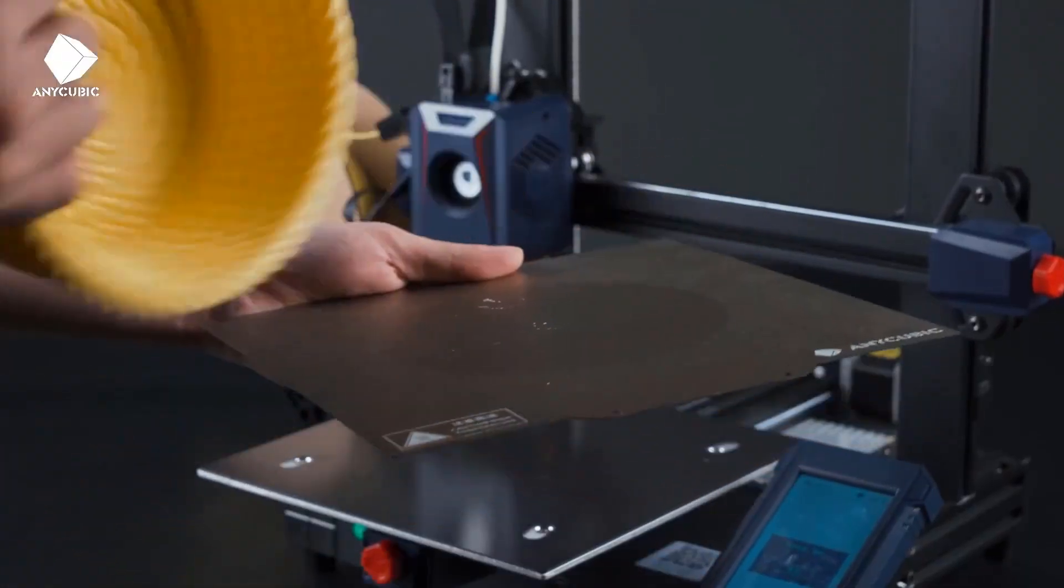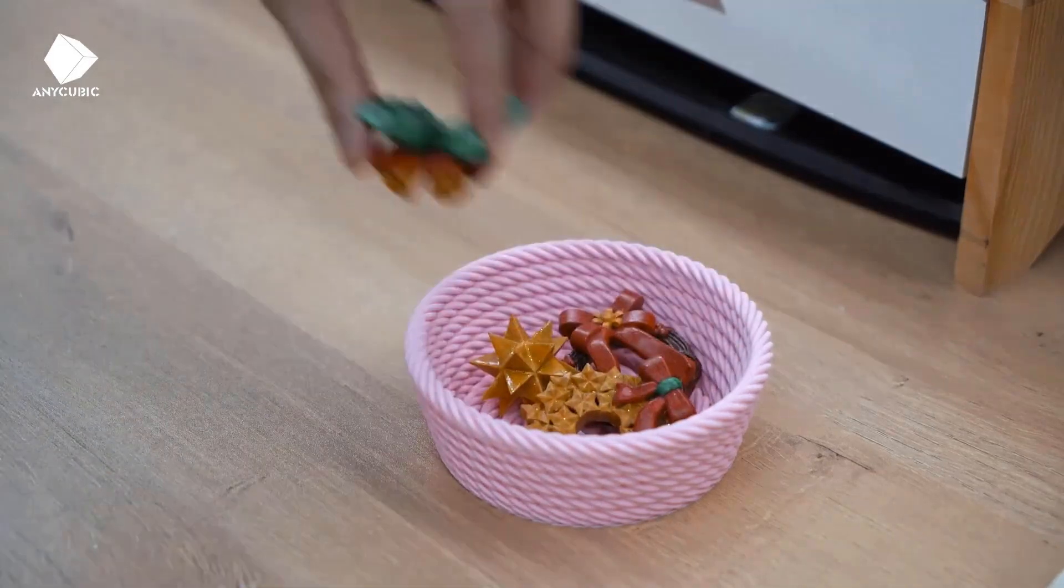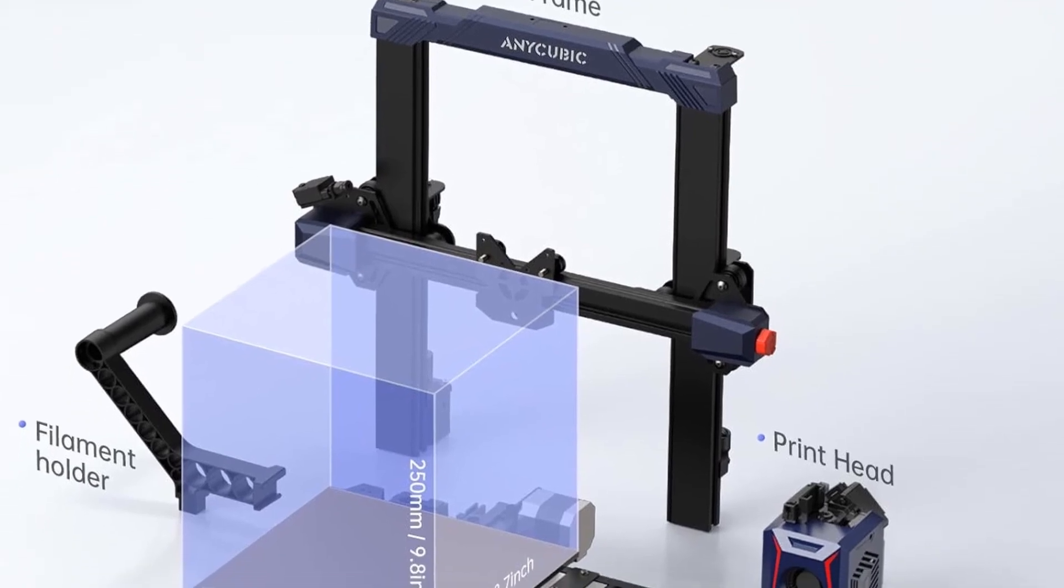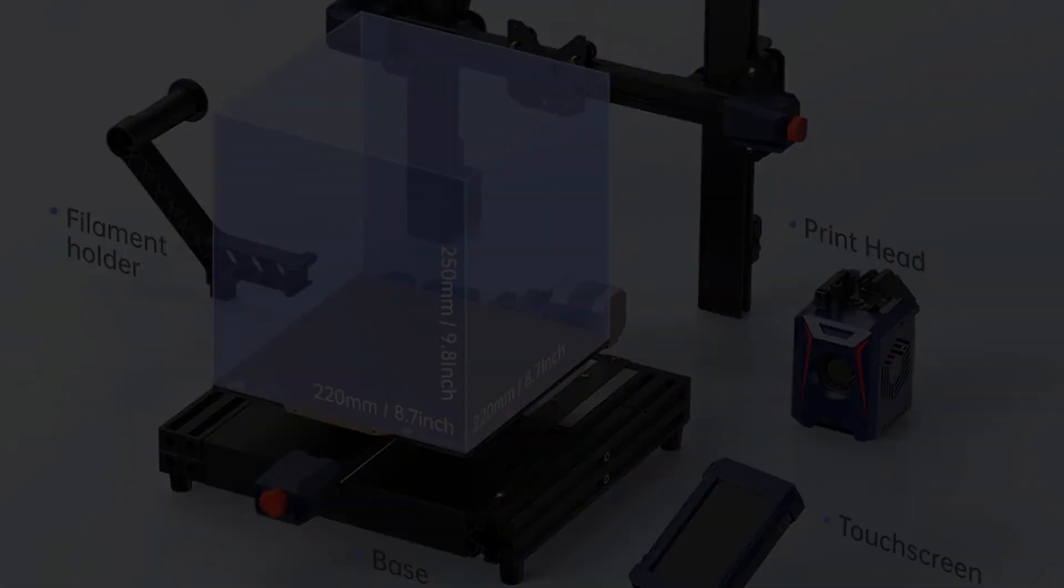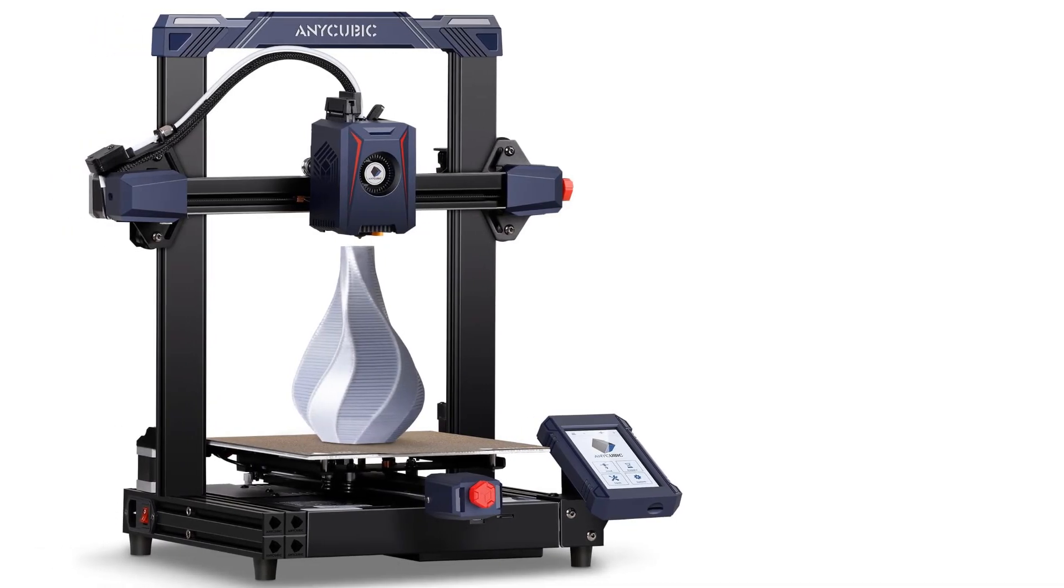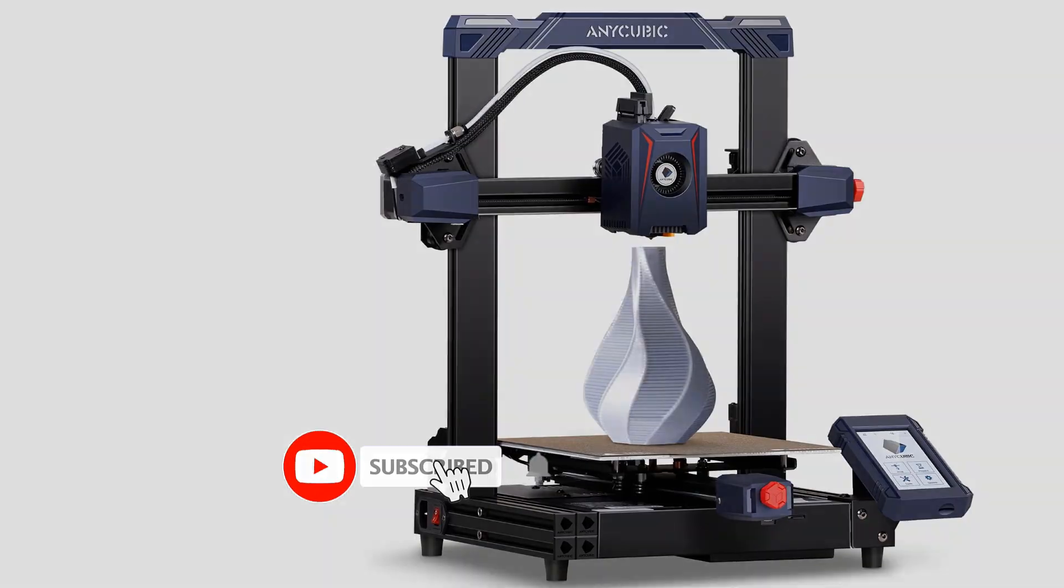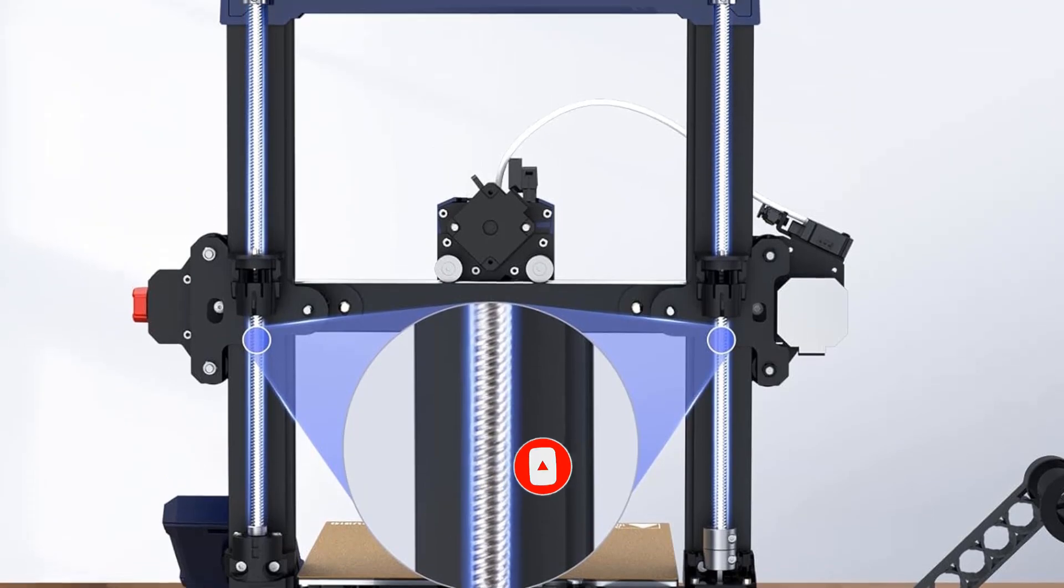The Anycubic Cobra 2 ticks off all these boxes, plus it's one of the fastest 3D printers we've tested. It lists at just $279 and is easy to use, with a unique extruder made to print as fast as possible. For software, it works with the popular open-source Cura program, but it also comes with the Prusa Slicer app, with tons of editing options for new and advanced users.